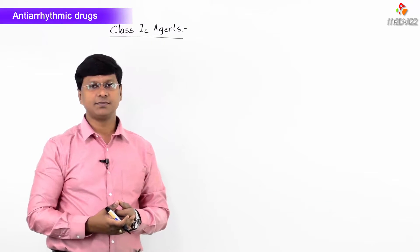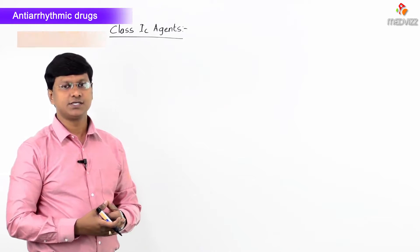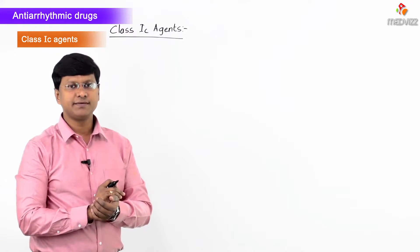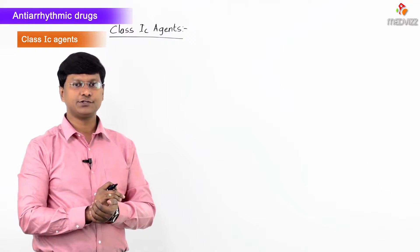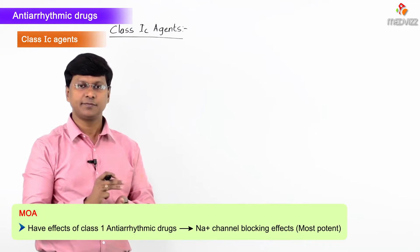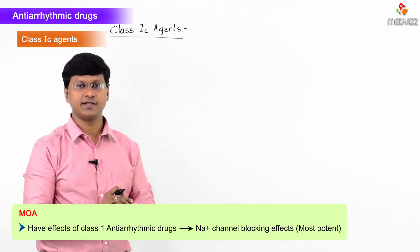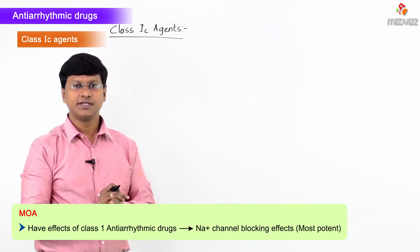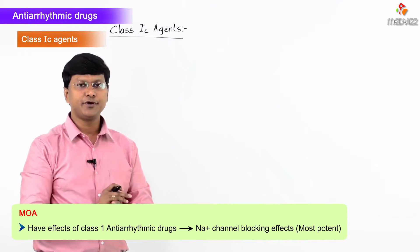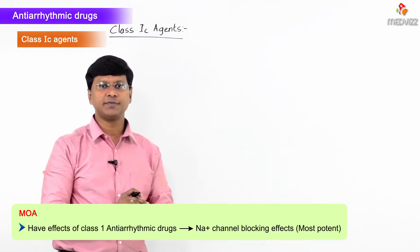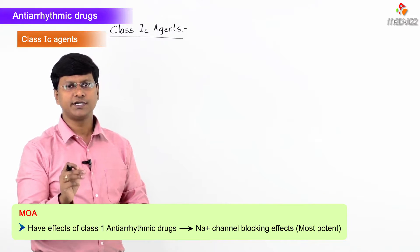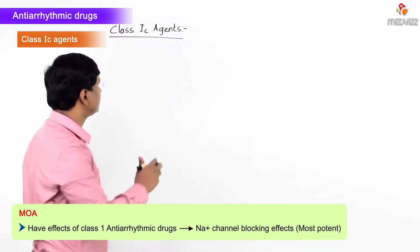Now let me discuss the Class 1C agents. These agents share the mechanism of Class 1 antiarrhythmic drugs — that is, sodium channel blocking effects. The important point to remember is that these agents have the most potent sodium channel blocking effects among all Class 1 agents.